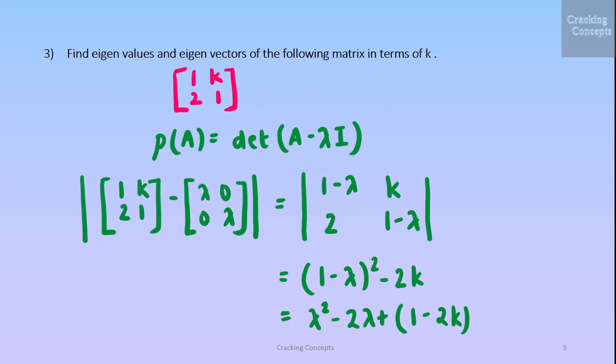The third question is to find eigenvalues and eigenvectors of the given matrix here in terms of k. For this first we need to find the characteristic polynomial which is got by taking the determinant of A minus lambda I. So the determinant of the matrix A minus lambda I, where I is the identity matrix. On multiplying it with lambda we'll get this matrix. We'll subtract these two so we'll get this. Then we take the determinant and we rearrange them into a form like this.